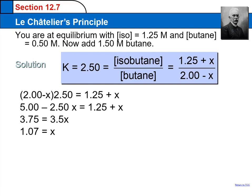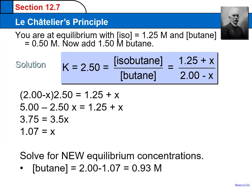Remember, this isn't math class where we just stop at x equals 1.07. We have to go back and figure out the equilibrium concentrations. Butane is 2 minus x, which is 1.07. The new concentration at equilibrium for butane is 0.93 molar. Isobutane gained 1.07 molar. You can see the one-to-one stoichiometry loss and gain, and the new concentration is 2.32 molar for the product. This is how the reaction shifted to the right after a reactant was added.